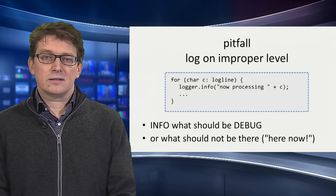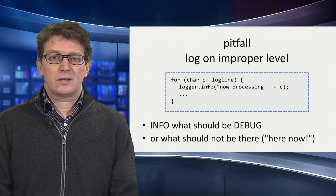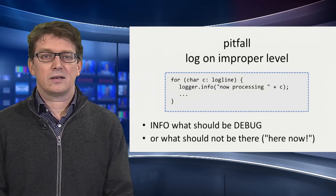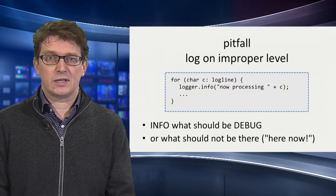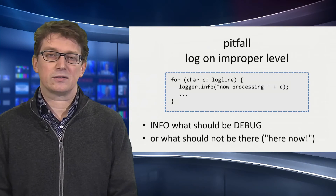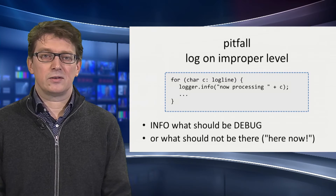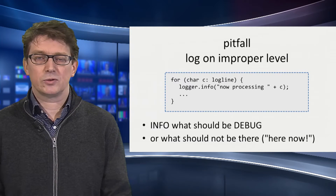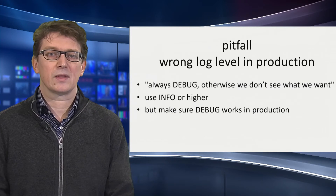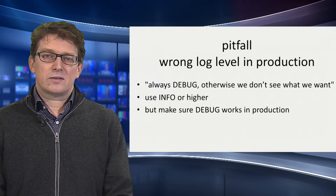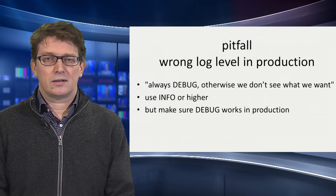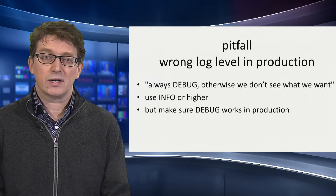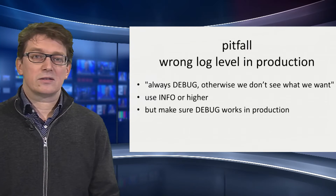When is there too much logging? For instance, when you log on an improper level. In this example, you see a loop over a string and for every character in that string, you write a log line on info level. This is obviously for debug purposes, so put it in a debug statement. Also consider whether it's really needed — statements like 'I'm here now' can be removed. We've seen cases with a lot of CPU and IO on production where debug level logging was enabled, which is a case of wrong log level.